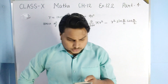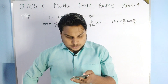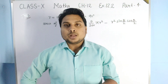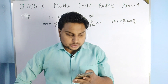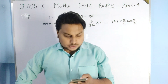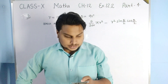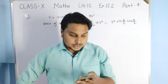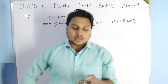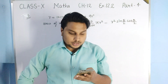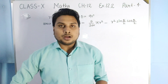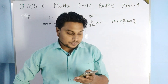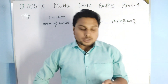Question 5: In a circle of radius 21 cm, an arc subtends an angle of 60 degrees at the center. Three things need to be found: the length of the arc, the area of the sector formed by the arc, and the area of the segment formed by the corresponding chord. All the required formulae have been taught — try to solve this question yourself.